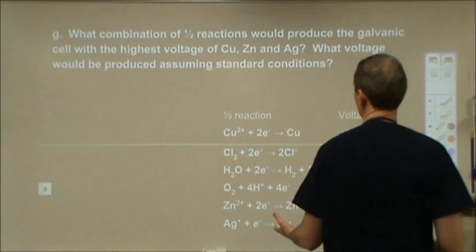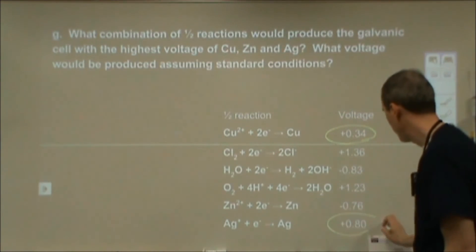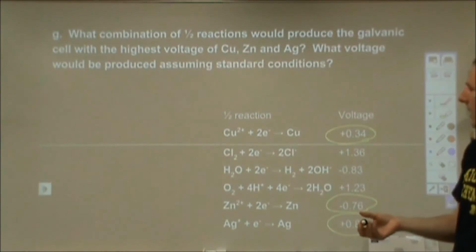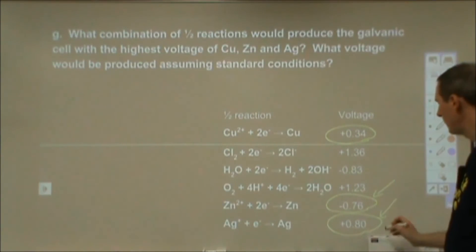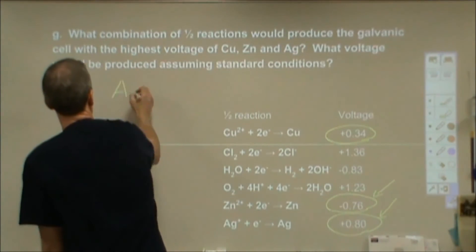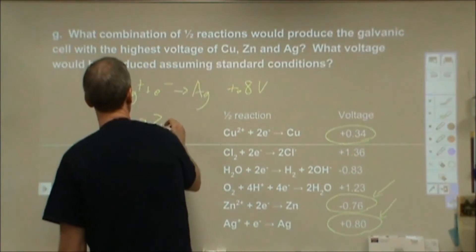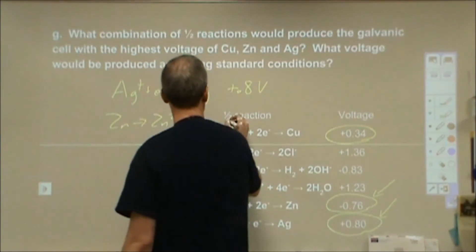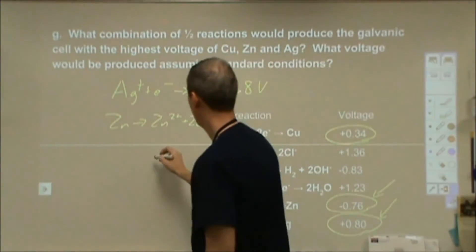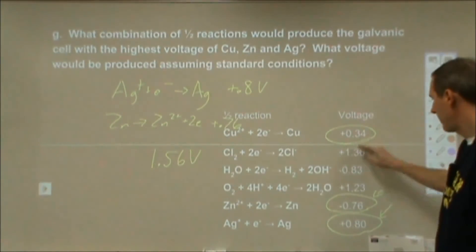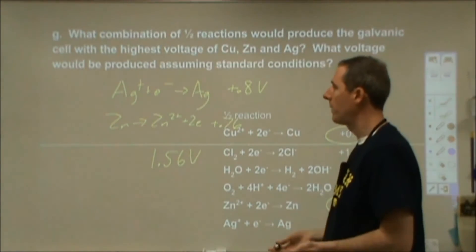Part G asks what combination of half-reactions — copper, zinc, and silver — gives the highest voltage. The voltages are +0.34 for copper, +0.80 for silver, and −0.76 for zinc. We want the widest gap, so we take zinc and silver. We keep silver as the reduction: Ag⁺ + e⁻ → Ag at +0.8 V. We oxidize zinc, flipping the sign from −0.76 to +0.76. Adding them gives a total cell voltage of 1.56 volts — the highest possible from those three options.